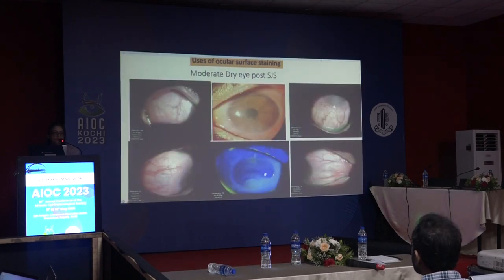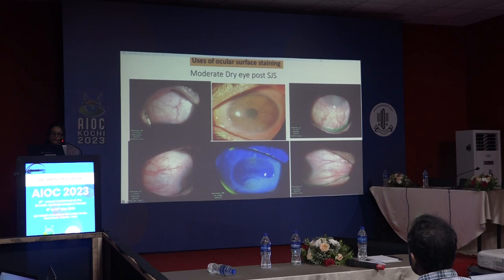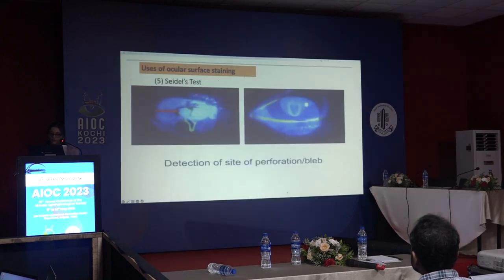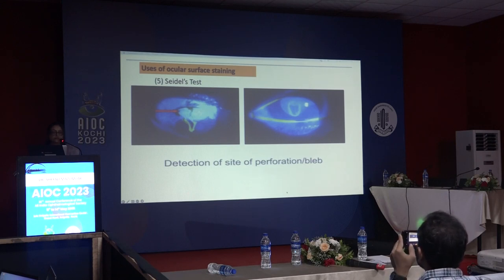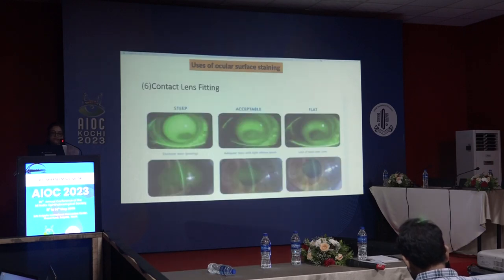In dry eye post-Stevens-Johnson syndrome, the typical staining pattern involves the inferior and superior one-third of the cornea — this is due to lid wiper epitheliopathy. Other uses of ocular surface staining include detection of occult perforation and leaking blebs using the Seidel test, and contact lens fitting.